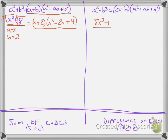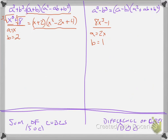For the next one I need to factor 8x cubed minus 1. I find a: the cube root of 8x cubed — the cube root of 8 is 2 and the cube root of x cubed is x, so a equals 2x. Then b: the cube root of 1 is 1. I'm not concerned about the negative sign because it's already in the formula. So using the difference of cubes formula, a minus b gives 2x minus 1; a squared means squaring the 2 as well, giving 4x squared; plus a times b is 2x times 1, which is 2x; plus b squared is 1. So the factored form is 2x minus 1 times 4x squared plus 2x plus 1.